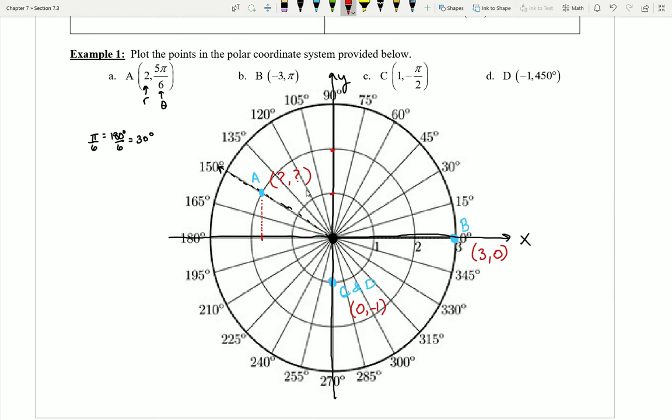So our goal in this video is to try to figure out how can I actually perform these particular conversions. How can I take a blue point and change it into a red point or vice versa?